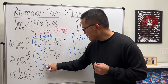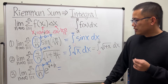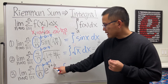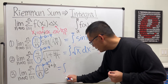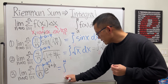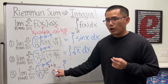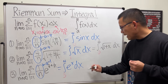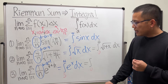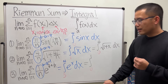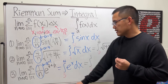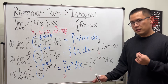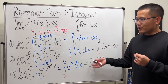For number three, 1 over n tells us b minus a equals 1. We have 3 plus i in the expression, so a equals 3, meaning you go from 3 to 4. The integral is from 3 to 4 of e^x dx. Or, starting at zero and going to 1, the input becomes 3 plus x, giving the integral from 0 to 1 of e^(3+x) dx. Both are equivalent — you can draw pictures to confirm that.